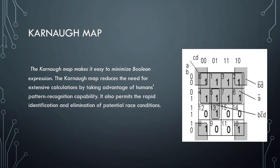Now I'm going to talk about one of his most significant works, the corner map. The corner map makes it easy to minimize boolean expressions, and the corner map reduces the need for extensive calculations by taking advantage of human's pattern recognition capability.